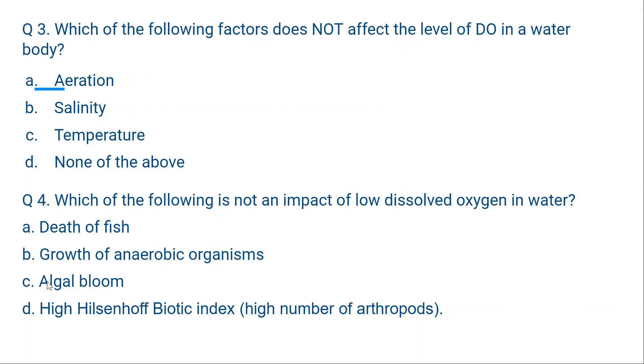Algal bloom promotes low dissolved oxygen. So low DO, algal bloom does not happen. When algal bloom happens, then DO is less. So low DO does not impact algal bloom. So C is the correct option.